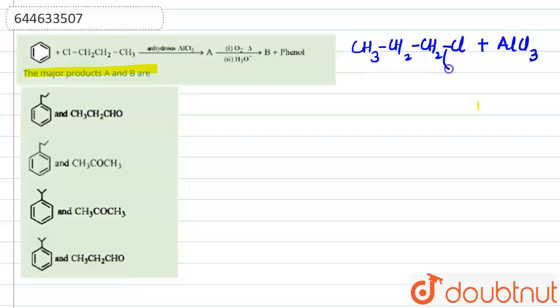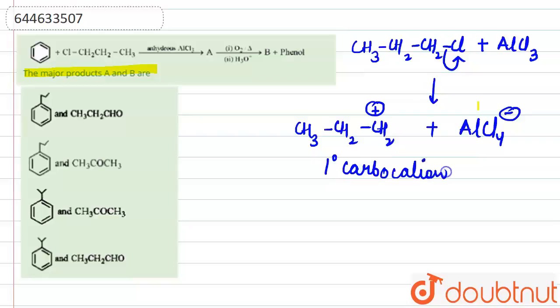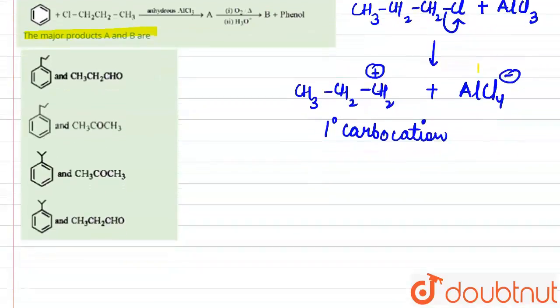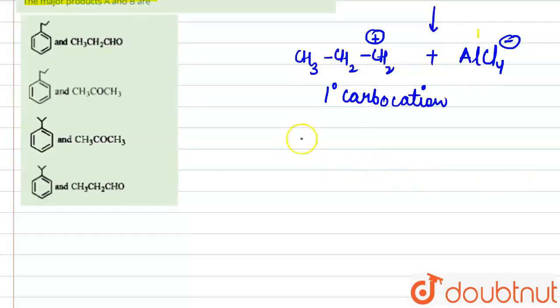So what will happen? This Cl, being a good leaving group, will leave the site and generate a carbocation on CH2 like this and will form a complex AlCl4 negative with AlCl3. Now this carbocation is one degree carbocation, but as you know that one degree carbocation is very less stable.